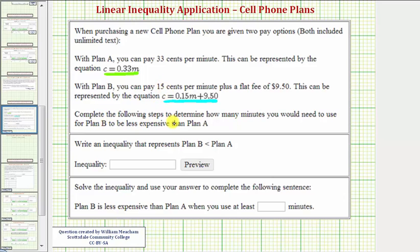Complete the following steps to determine how many minutes you would need to use for plan B, this plan here, to be less expensive than plan A. So we're first asked to write the inequality that represents plan B being less than plan A.